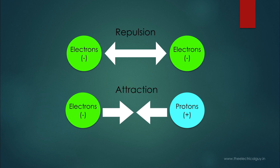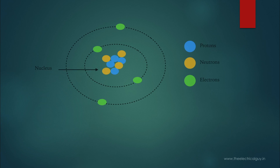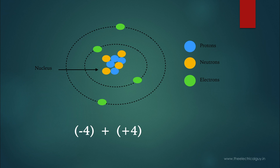Like two different poles of a magnet, two particles with different charges attract each other. So negatively charged electrons are attracted towards positively charged protons and vice versa. Now you may ask: if electrons and protons are attracted towards each other, wouldn't there always be attraction and repulsion going on in an atom? The answer is no. Look at this image carefully — it shows the basic construction of an atom with four electrons and four protons. We consider the charge on electrons as negative 4 and on protons as positive 4. So the net charge is positive 4 plus negative 4, which equals zero. Equal amounts of protons and electrons cancel out the net charge and keep the atom stable.